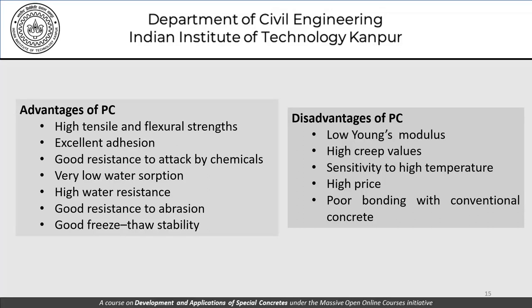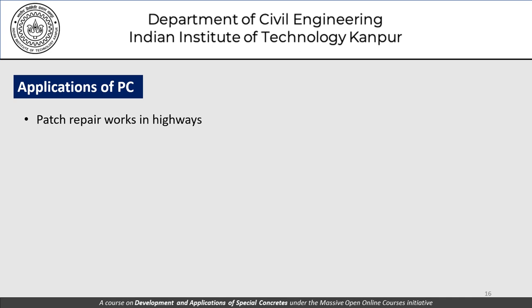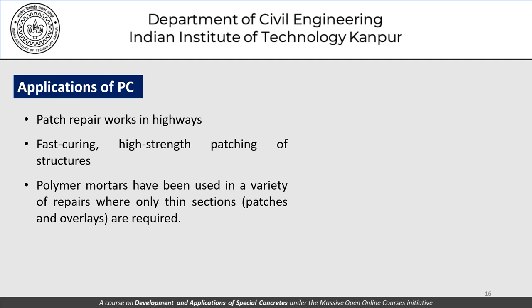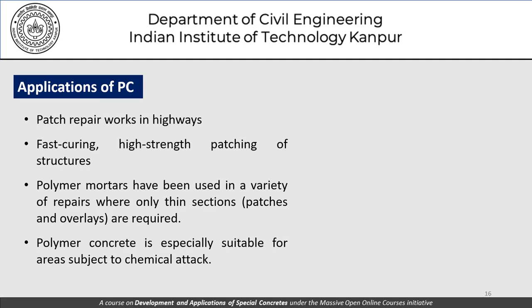The engineer must make a considered choice between these advantages and disadvantages when deciding to use polymer concrete in a particular application. Applications include patch repair work in highways, fast-curing high-strength patching of structures, polymer mortars for thin section repairs, and areas subjected to chemical attack. These important applications made it worthwhile to include at least a brief sensitization towards this material in this course.